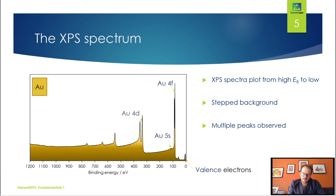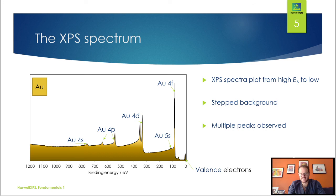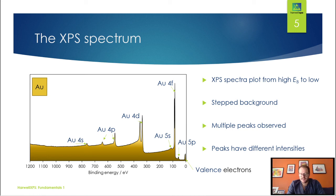If we look from low binding energy to high, we are going from the outside of our atom in. Right around zero eV we've got our valence electrons. As we move down our spectrum, we've got gold 4f electrons, gold 5s, 4d, 4p, and 4s — these are all the electronic orbitals below the valence level. When we produce this survey XPS spectrum, we're exciting all of these electronic orbitals and quantifying how many electrons are associated with each orbital. These peaks have different intensities, related to the efficiency of the removal of the photoelectrons as well as the multiplicity of the electrons.